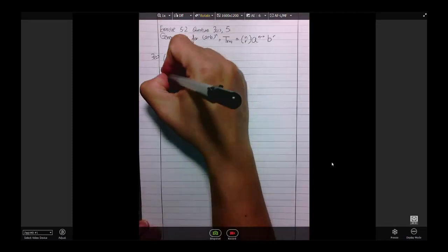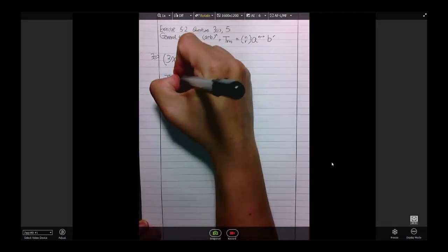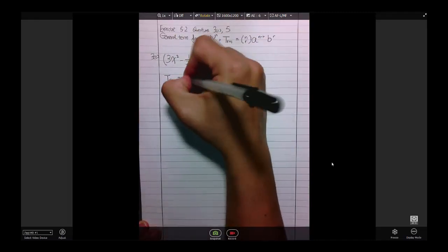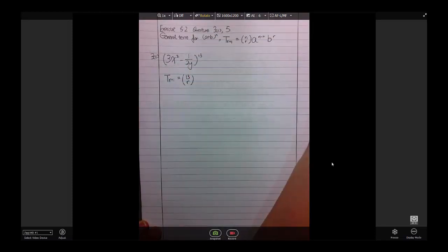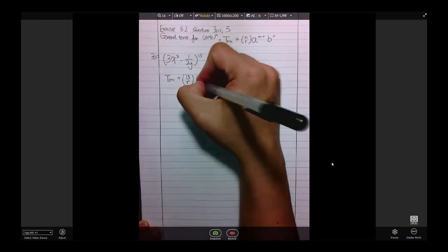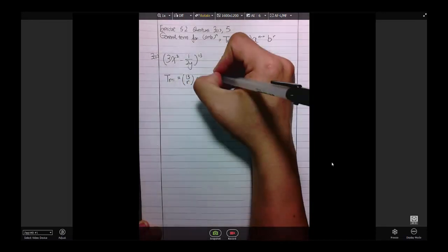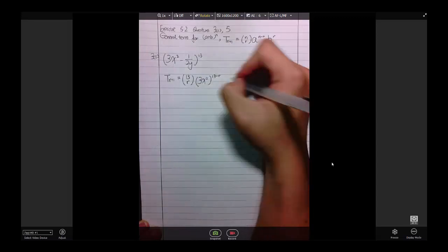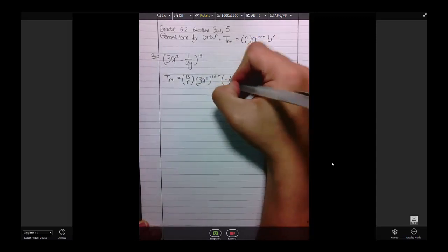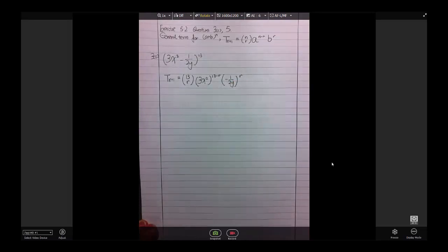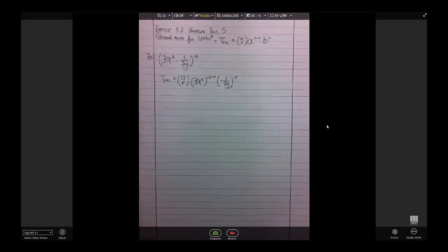We apply the formula. So, we say tr subscript r plus 1. We just apply n choose r. So, we say 13 choose r, then we have a, which is 3x squared to the power of n minus r, 13 minus r. Then we have negative 1 over 2y to the power of r. Just take a look at this. So far, so good. I don't think this is actually very difficult there. And we are actually done. In this case, this is actually the general term for 3c. That's all the questions asking. Do not expect the questions in your exam to be this easy. But, it's a start anyway.